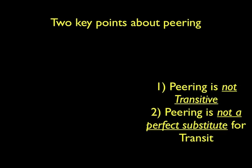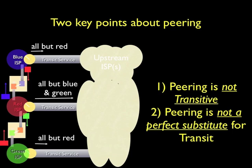There are two key points to make about peering. First, peering is not transitive. That is, if the blue ISP peers with the red ISP and the red ISP peers with the green ISP, that does not imply that the blue ISP can reach the green ISP through its peering relationship with the red ISP. Remember that peering is a reciprocal exchange of access to each other's customers, and this does not necessarily include the other peers' customers. In this way, peering is therefore not a perfect substitute for transit, which gives you access to the global internet.